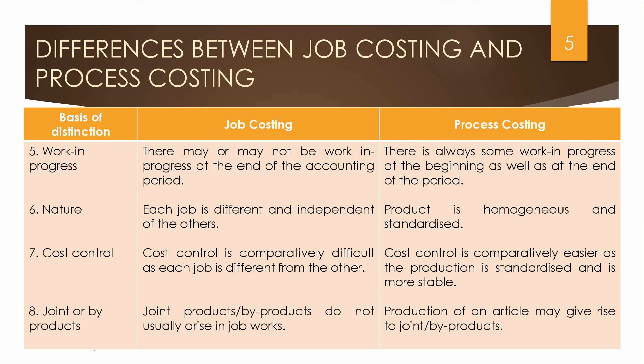Next is the nature of production. In job costing, each job is different and independent of others, based on customer demand and specification. In process costing, the product is homogenous and standardized — ultimately the final product is homogenous.